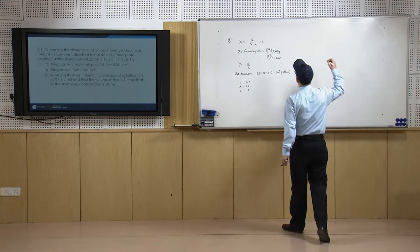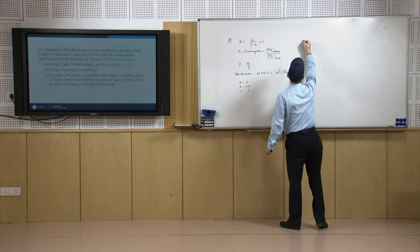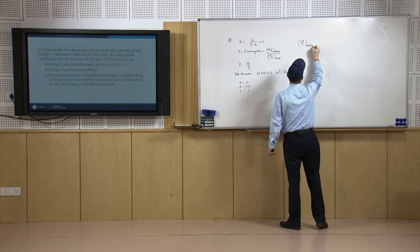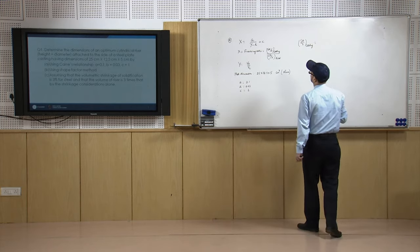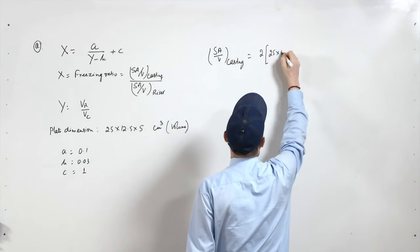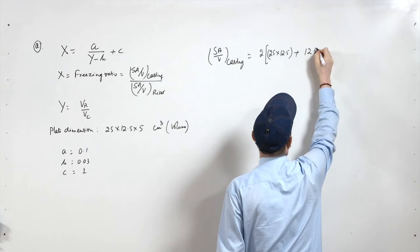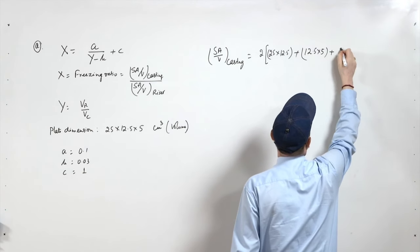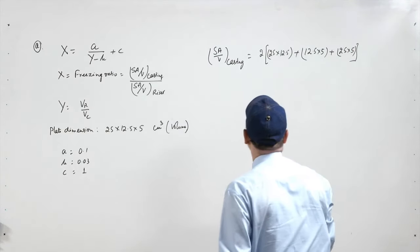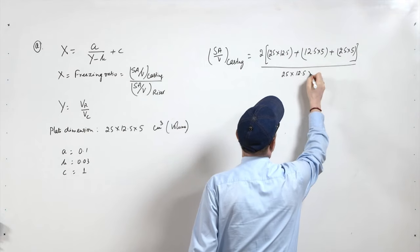Let us calculate x, the freezing ratio, for which we need surface area by volume of casting. Surface area by volume of casting is: 2 times (25 into 12.5 plus 12.5 into 5 plus 25 into 5) upon volume of the casting, that is 25 into 12.5 into 5.